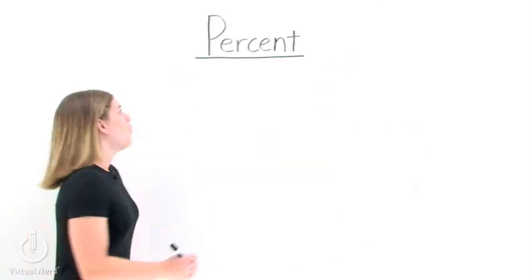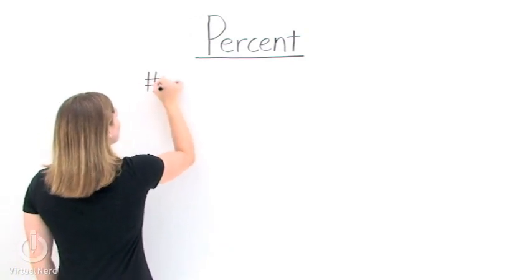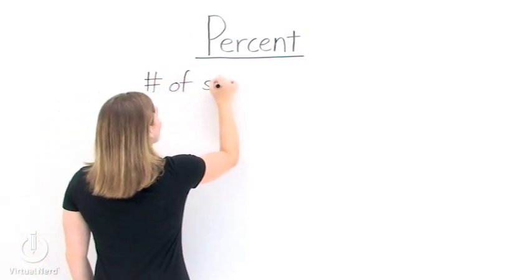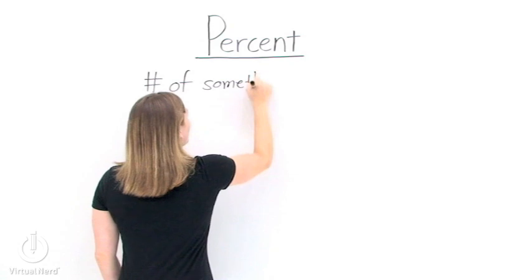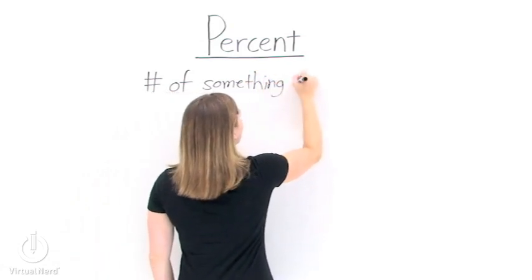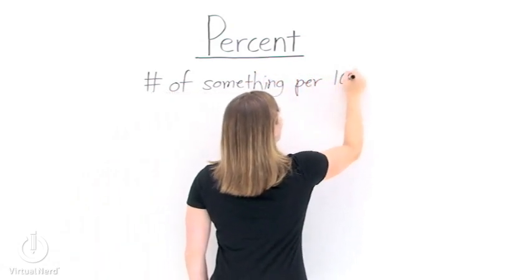What is a percent? Well, a percent is simply a special way to write a fraction of something. In other words, a percent is the number of something per 100.